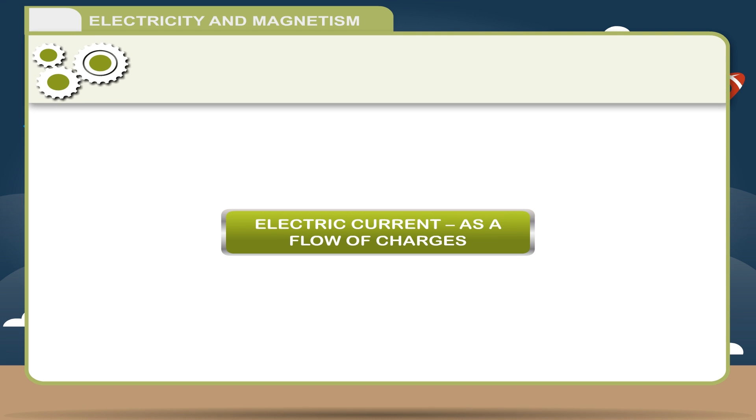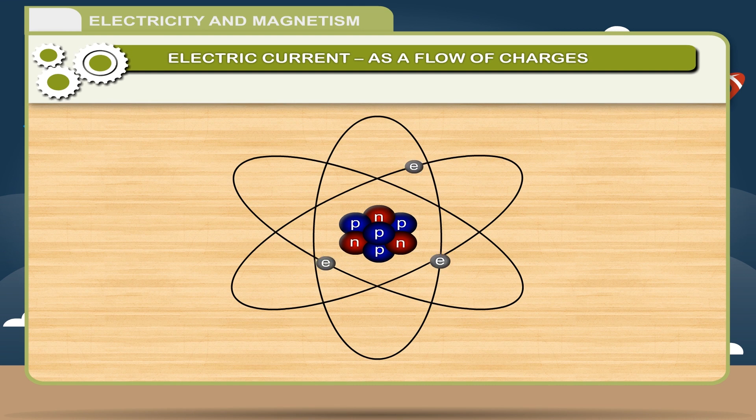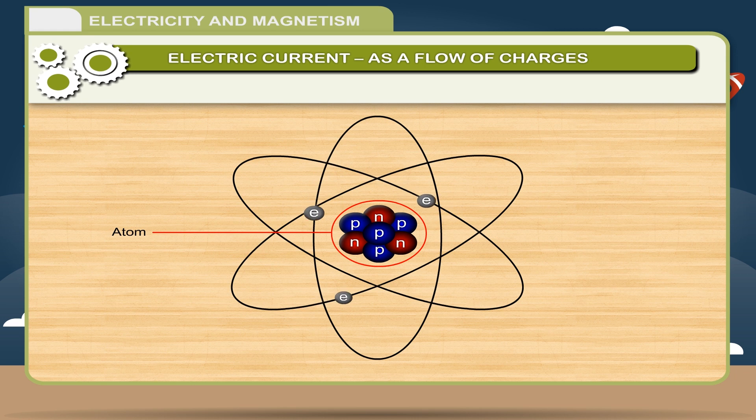Electric current as a flow of charges. As we know that an atom is electrically neutral, it has positive charges, i.e. protons, which are heavy so they remain attracted to the atom.